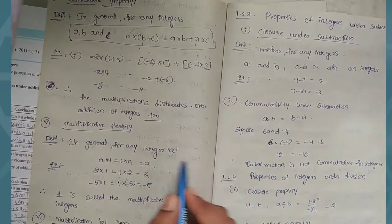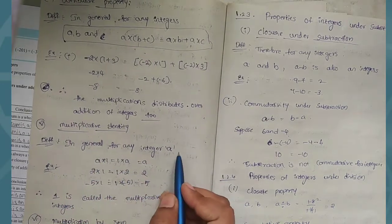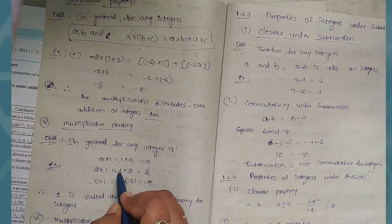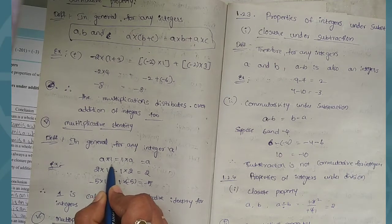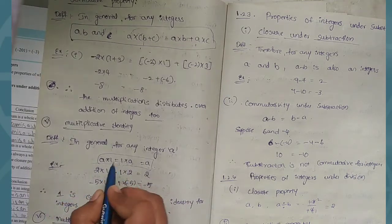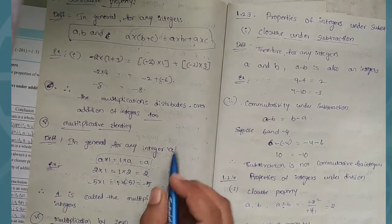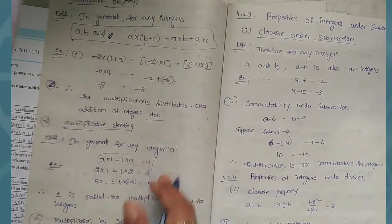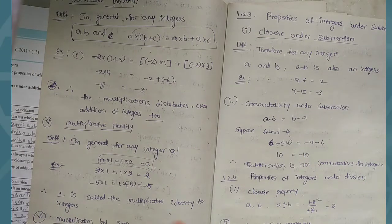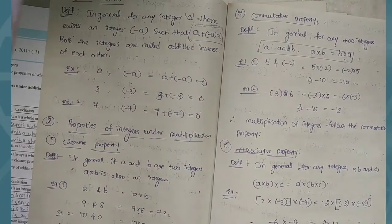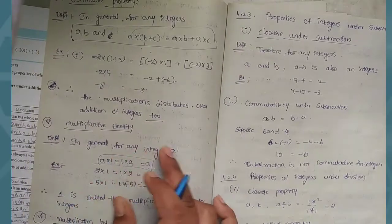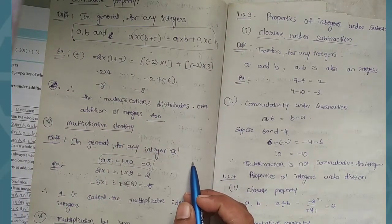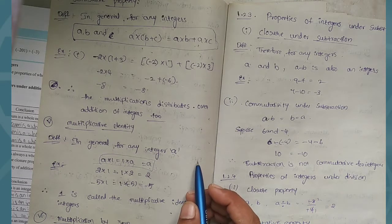Next, multiplicative identity. In general, for any integer a, a into 1 equals 1 into a equals a. So 1 is called the multiplicative identity for integers. Now we have covered: closure property, commutative property, associative property, additive identity, additive inverse, and multiplicative identity.